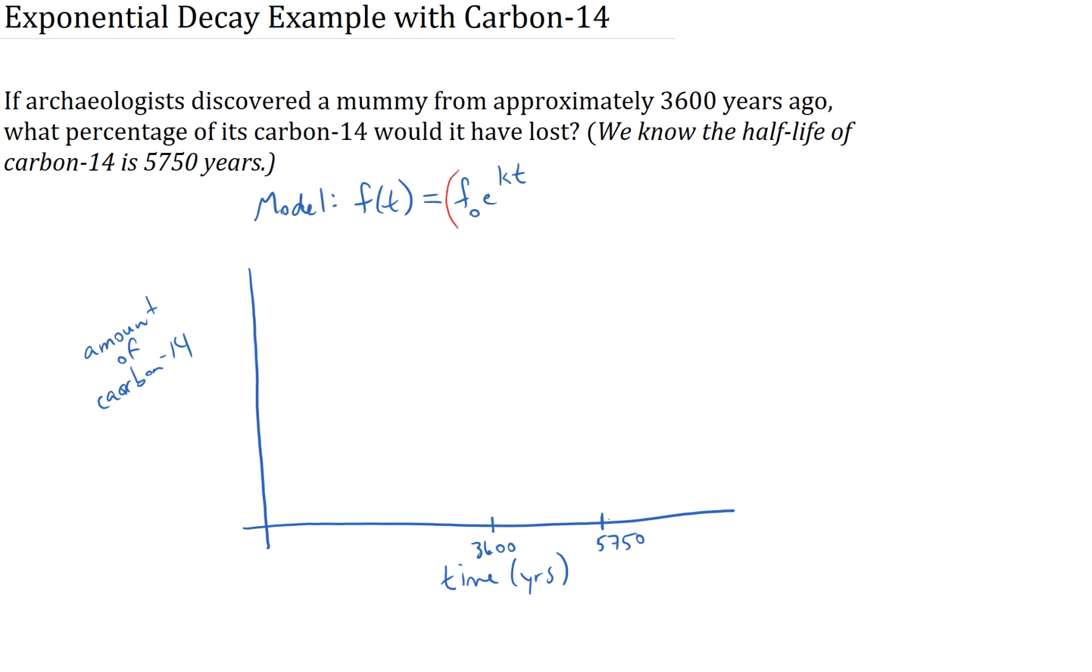What's missing here is this f sub zero, the initial amount, is not given. But this problem is asking for what percentage of the Carbon-14 is lost. So that tells us it doesn't matter what initial amount we use. We're just interested in what the percentage is that it's going to lose. So choose any initial amount. Lots of times I like to choose 100. It's a nice, simple number to work with. I can think of it as being 100%. So I'm going to choose 100 units, grams, milligrams, percent, whatever, 100 units of Carbon-14 at this time zero, which is in fact 3,600 years ago.